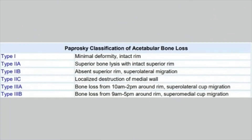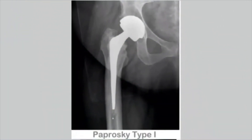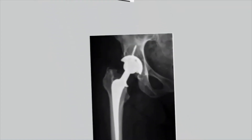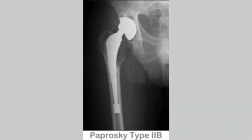Let me show you some more pictures. This is Paprosky type 1 — there is minimal acetabular deficiency. This is Paprosky type 2a — there is superior rim loss without migration. This is type 2b — superior rim loss as well as superior migration.